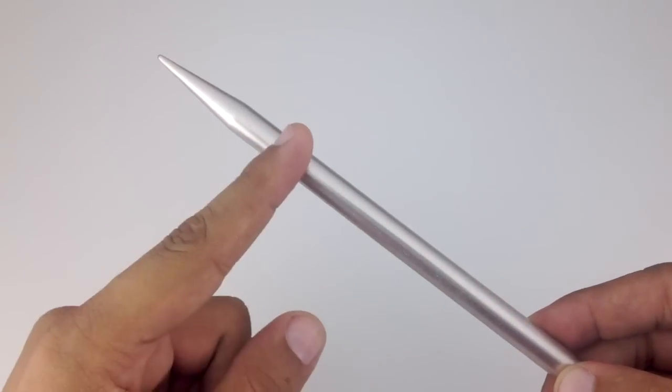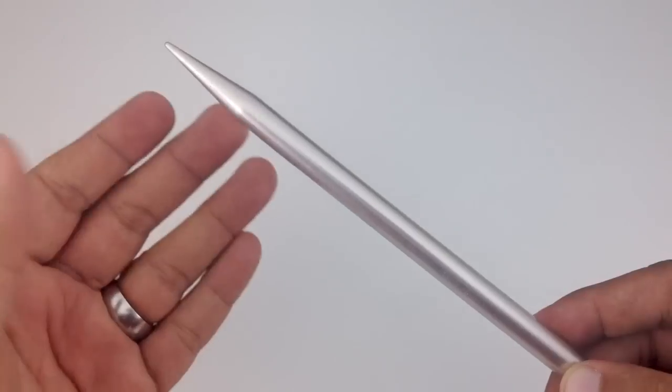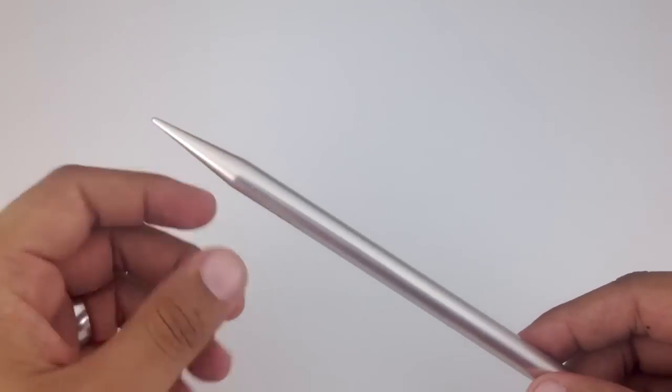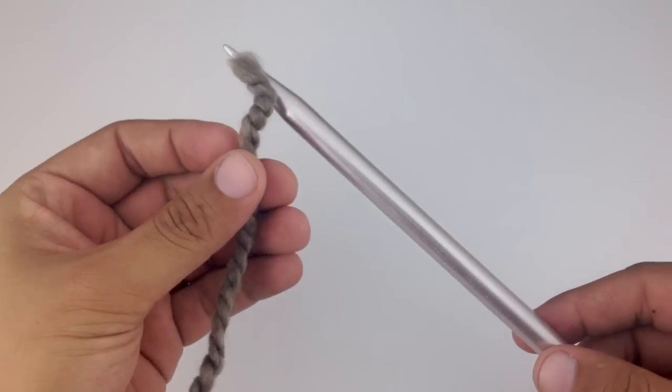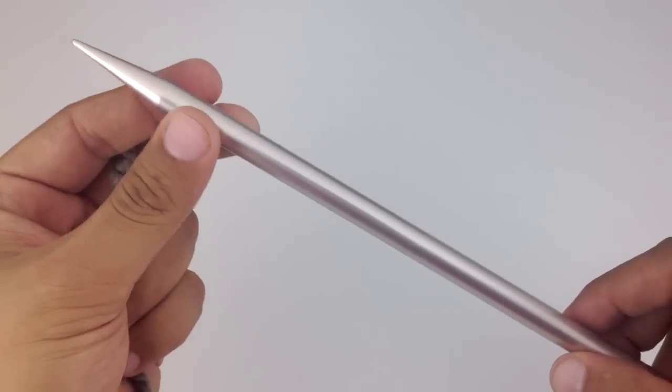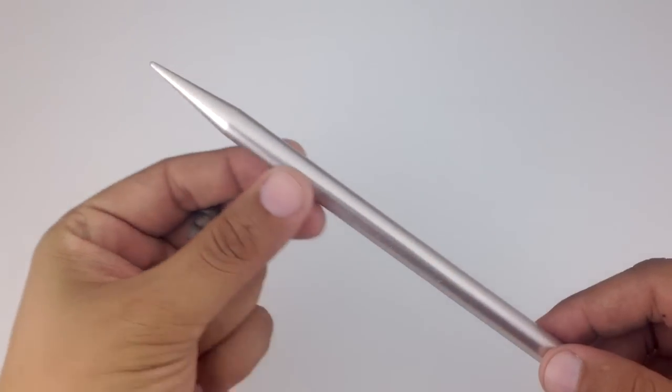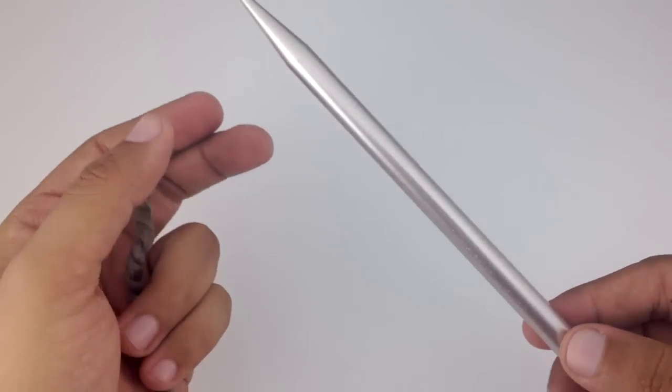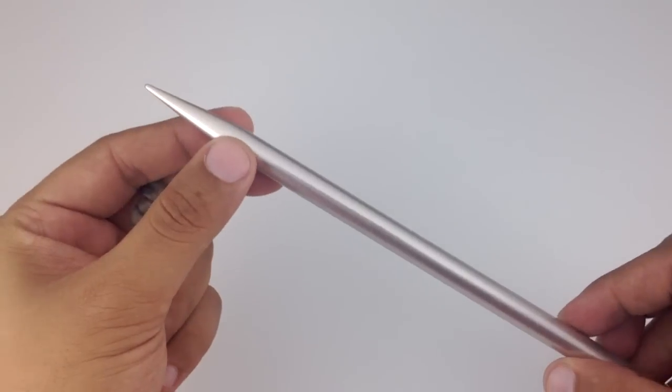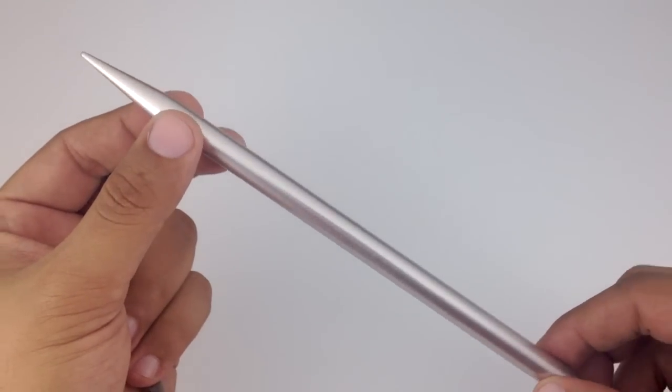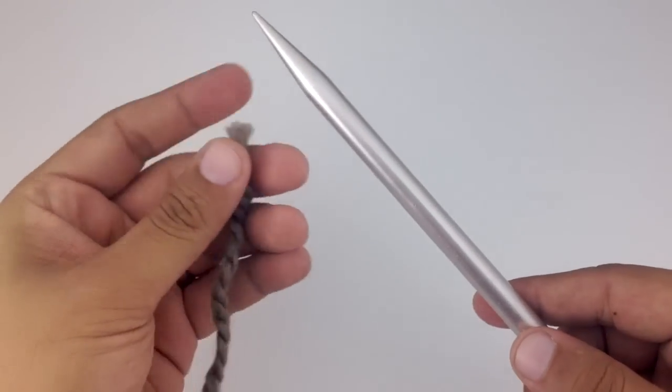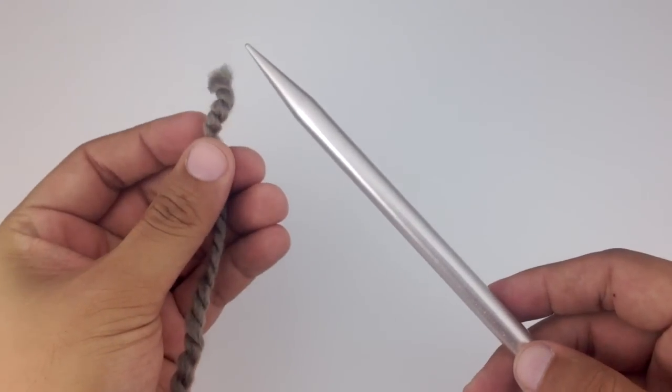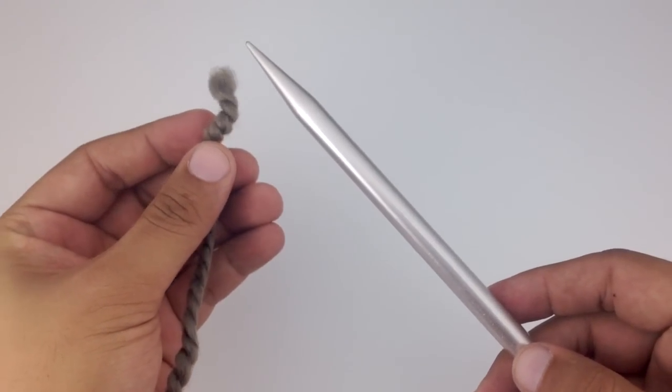The method that we use to do this is called casting on. It's a way of attaching the yarn to our stitches and giving us a base row to work our fabric from. There are lots of ways to do casting on, and each one has its own special use for a particular type of project, but one of the simplest ways is called the backwards loop cast on.